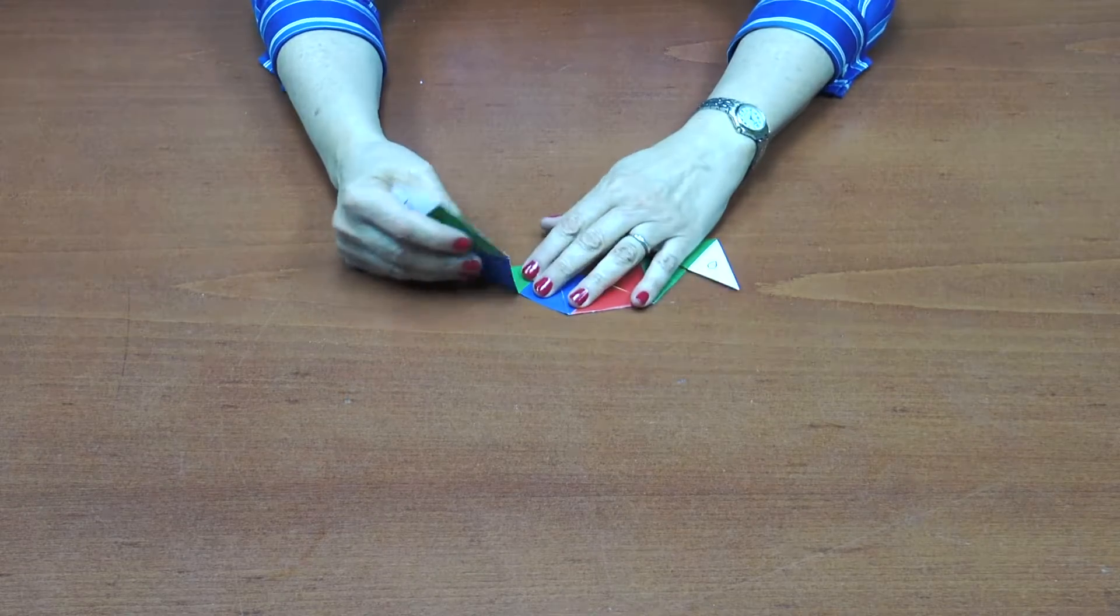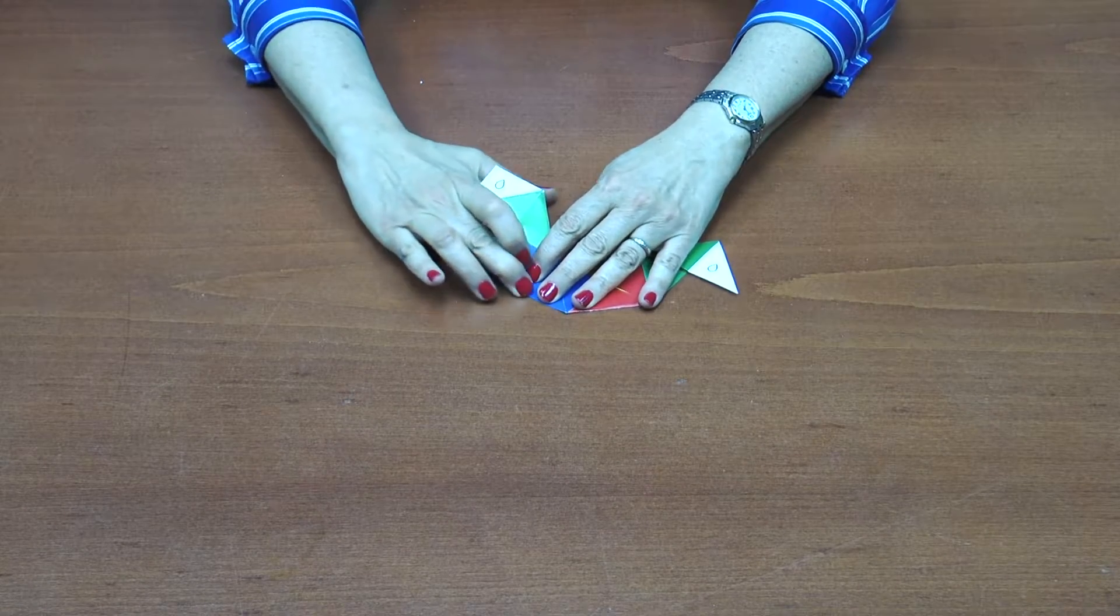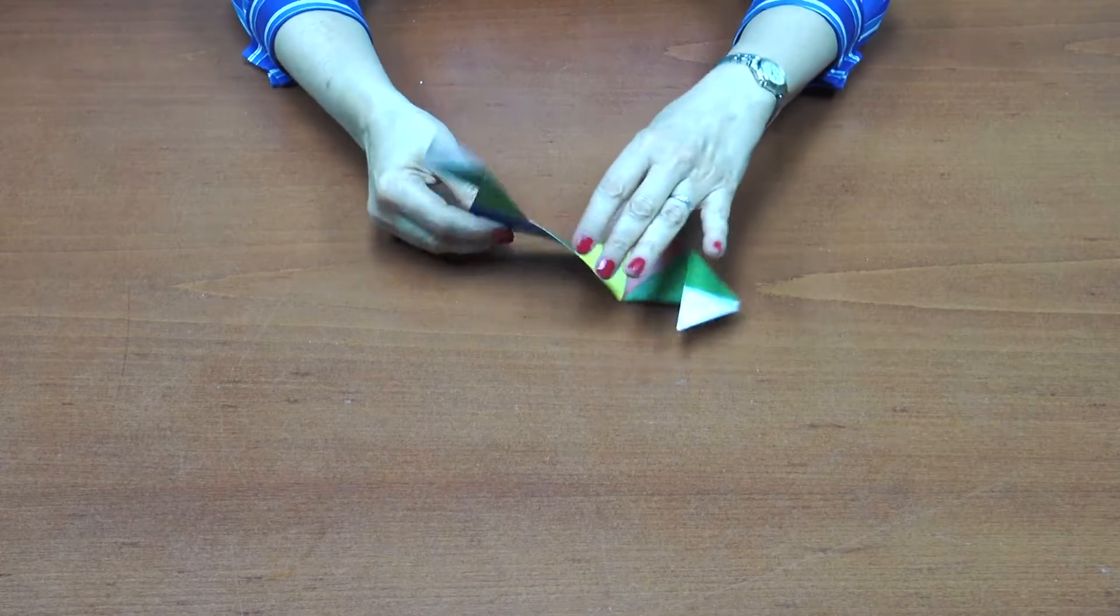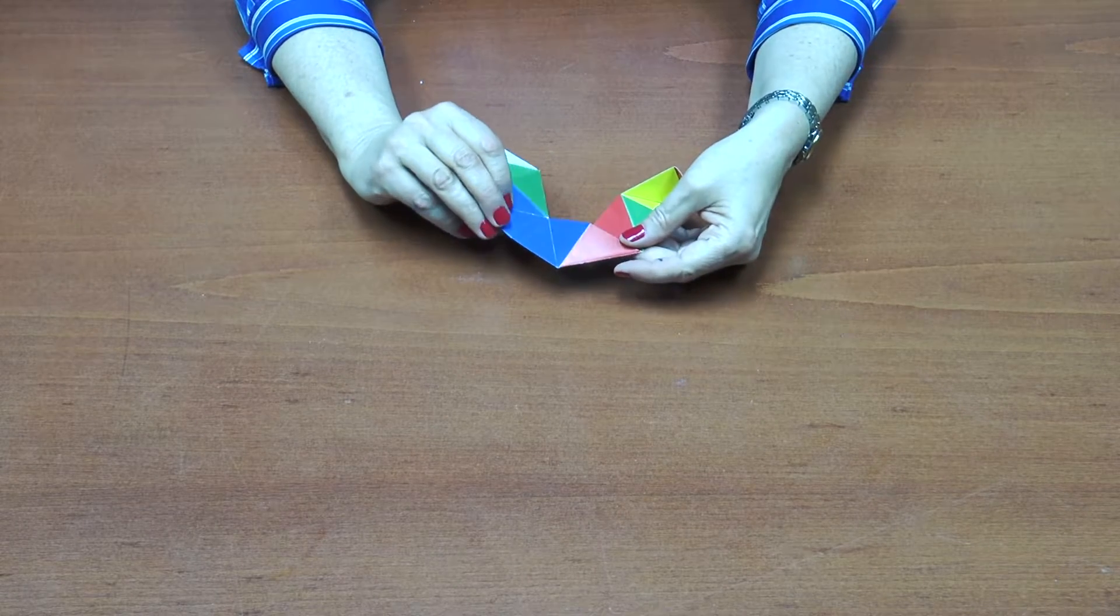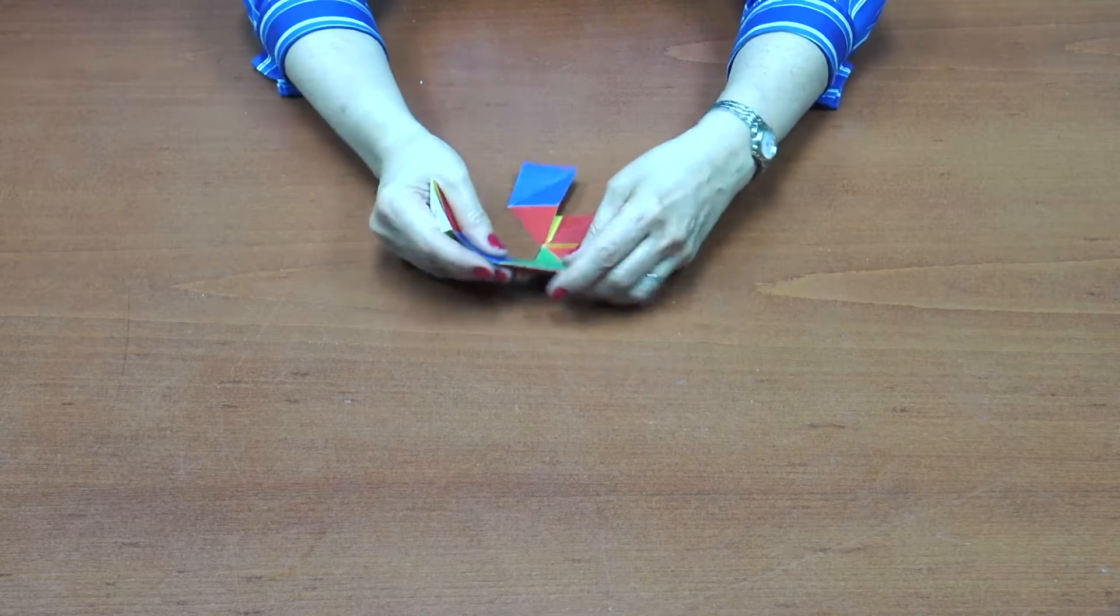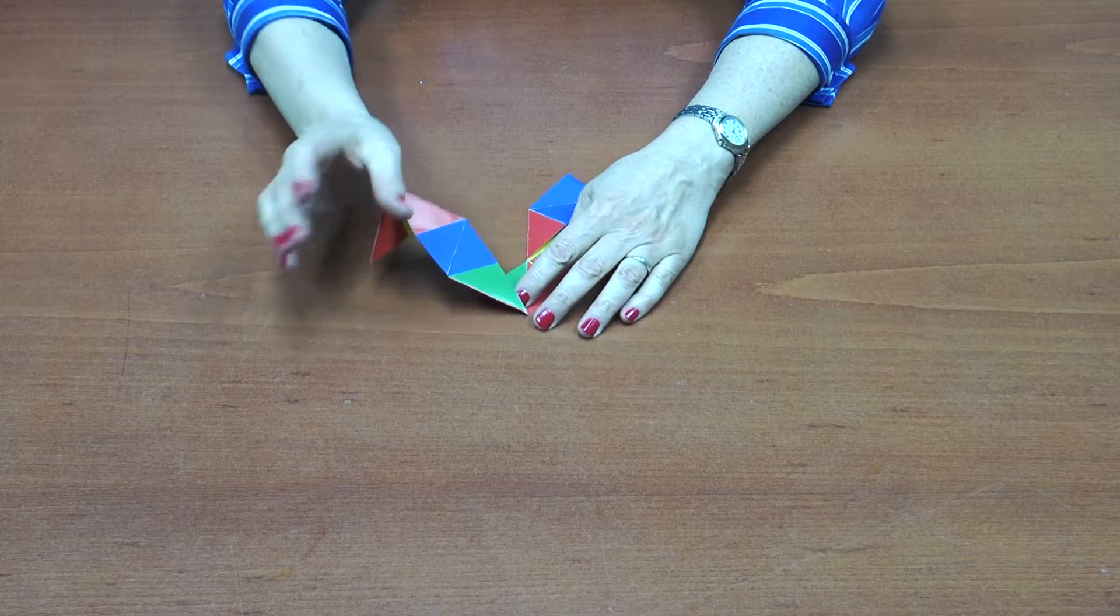And now I'm going to go green on green because I want red and blue to be on the outside of the square.